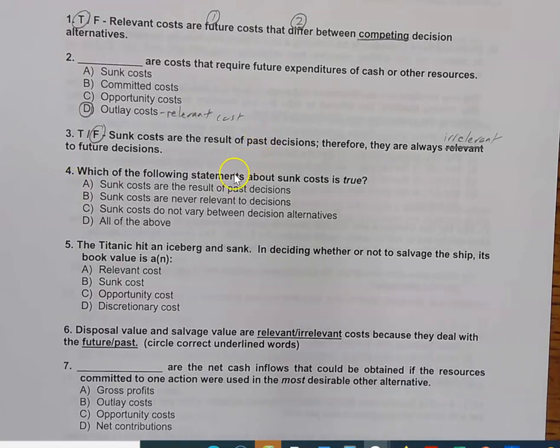Question number four says, which of the following statements about sunk costs is true? Sunk costs are the result of past decisions. Well, that's what we just said right here. So, we know that A is the answer, but we have an all of the above here. So, let's make sure that the others are not as well. Sunk costs are never relevant to decisions. Well, same thing. We just said that they are always irrelevant, and if they are always irrelevant, then they are never relevant. So, it looks like our answer is probably going to be D. Answer choice C says, sunk costs do not vary between decision alternatives. Well, here's the thing.